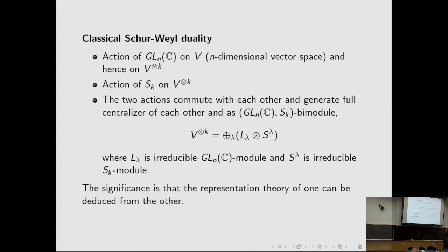V^{⊗k} can be considered as a GL(N,C) × S_k bimodule and decomposed as a direct sum where L_λ is an irreducible GL(N,C) module and S_λ is an irreducible S_k module. The indexing set for the irreducible modules is the same. This phenomenon is known as classical Schur-Weyl duality, and its significance is that studying the representation theory of one group is equivalent to studying the representation theory of the other.